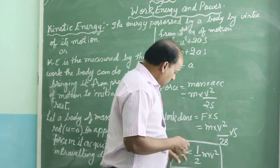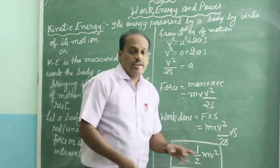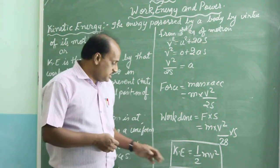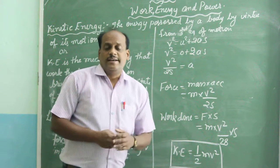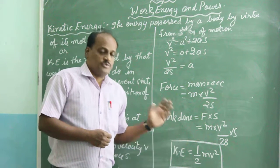We get the formula of kinetic energy equals to half mv². This is the formula for kinetic energy of an object.